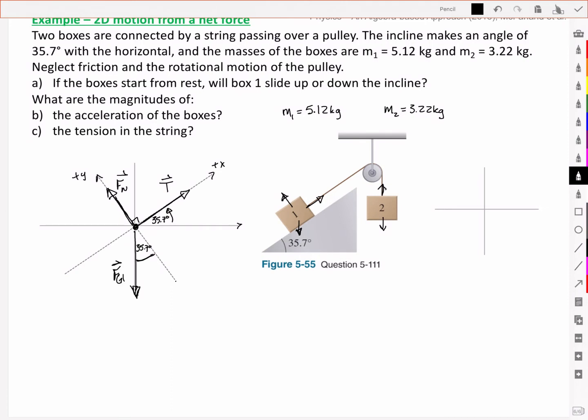And so gravity, now we can break that down into two components. A component that is in the x-direction and a component that is in the y-direction. And so for the y-direction, we've got Fg1y is then Fg1 cos theta in this case because it's adjacent to the theta of 35.7. I'm going to substitute in here that that's M1g cos theta.